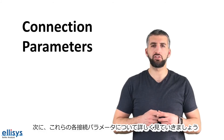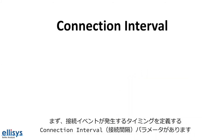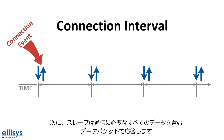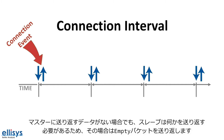First, we have the connection interval parameter, which defines when a connection event occurs. At each connection event, the master starts by sending a packet to the slave. The slave then responds with a data packet and includes any data that it needs to communicate back to the master. In the event that it doesn't have any data to send back, the slave is still required to send back something, so it simply sends back an empty packet.